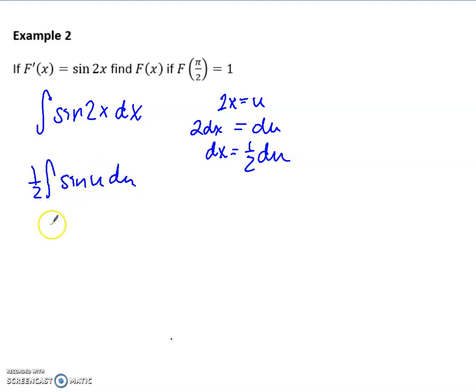My integral of sine, if you remember, is negative cosine plus c, because it's indefinite. So, again, we know that if we plug in pi over 2, but, oops, don't forget, for this one, because we're indefinite, we do need to plug back in that u value. So I am going to plug back in 2x.